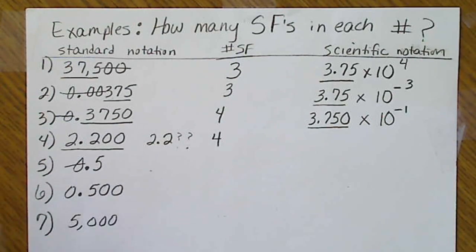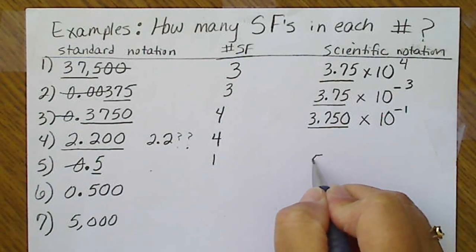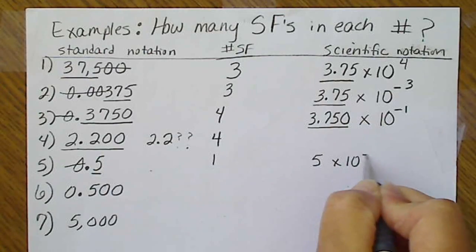0.5, we're going to cross out that leading zero. This has one significant figure, and this would be 5 times 10 to the negative 1.